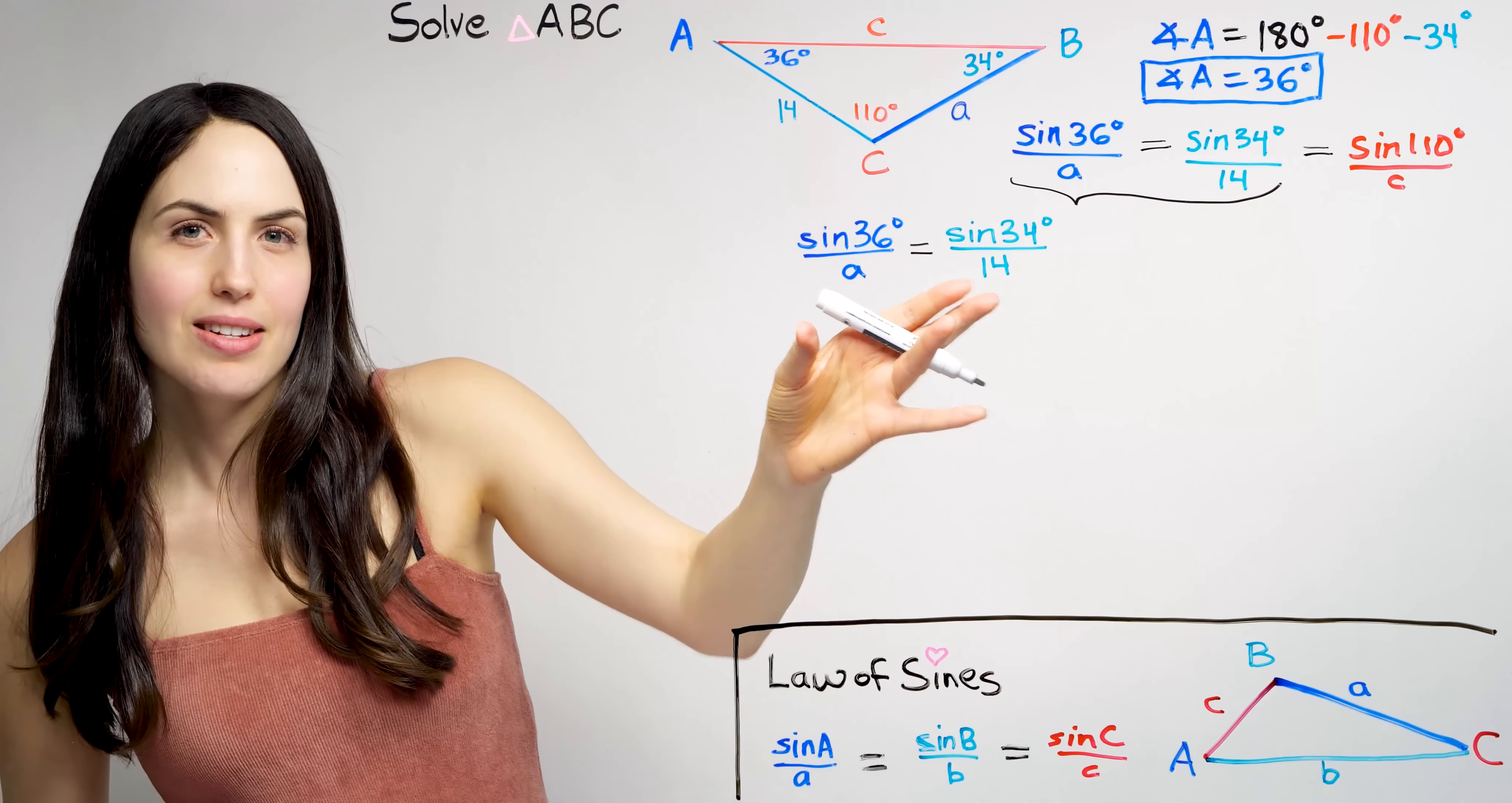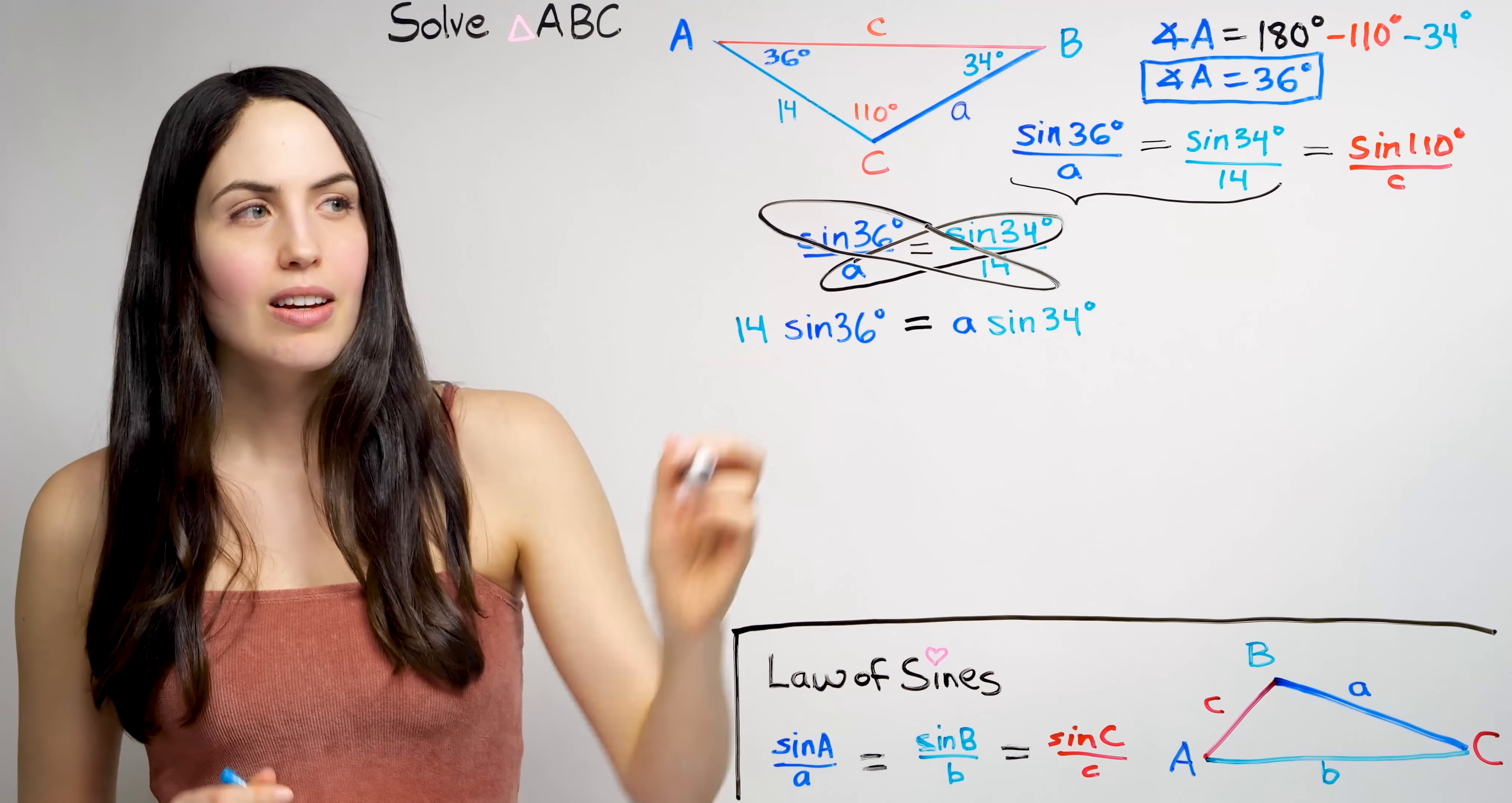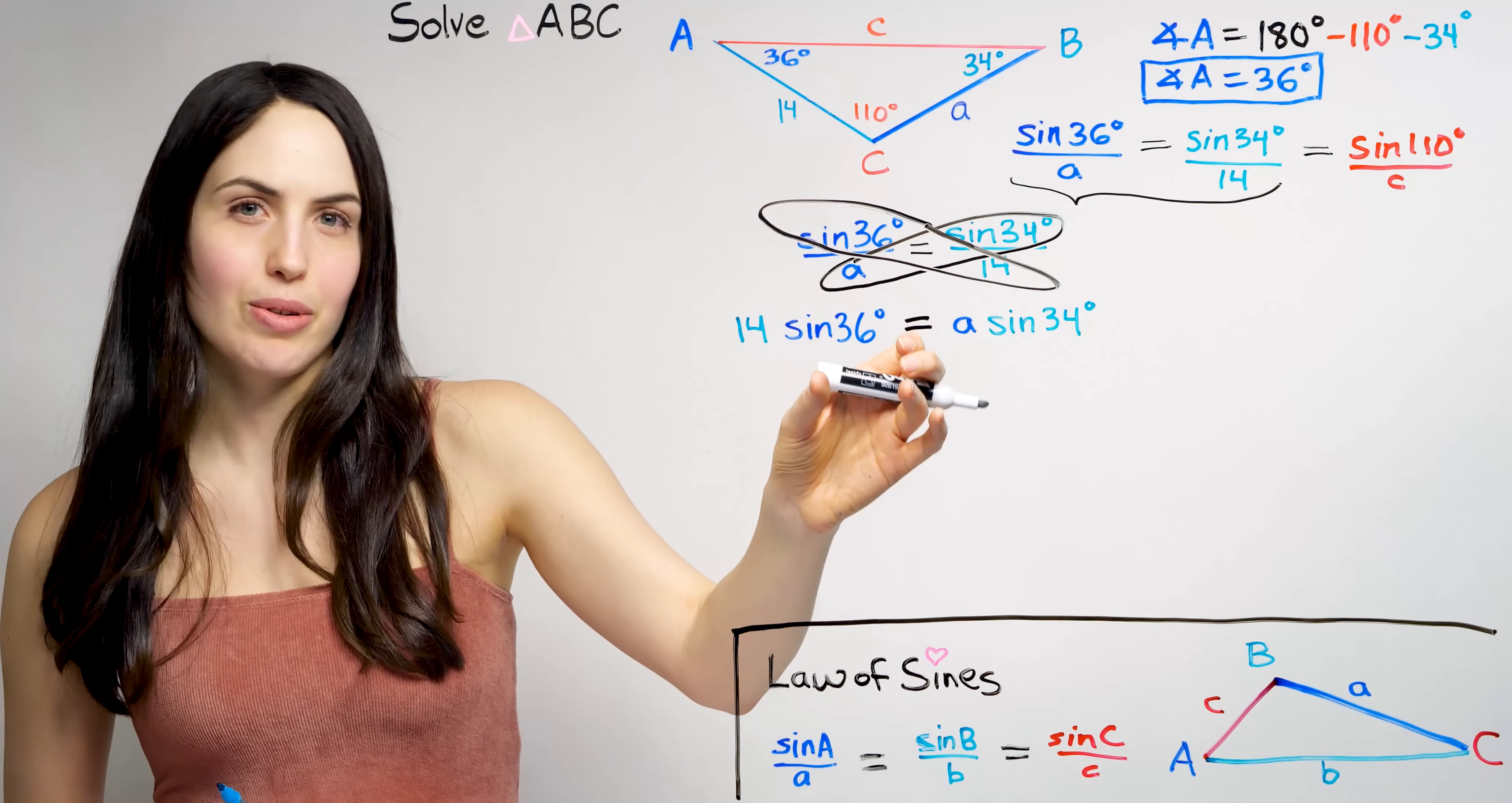So we separate that part out to solve. And then, what did I just do here? An easy surefire way to solve a proportion like this, that you can always rely on, is to cross multiply. So if you have two fractions like this equal to each other, and it's not immediately obvious to you how to solve right away, how to rearrange it in your head, you can get it in a simpler form.